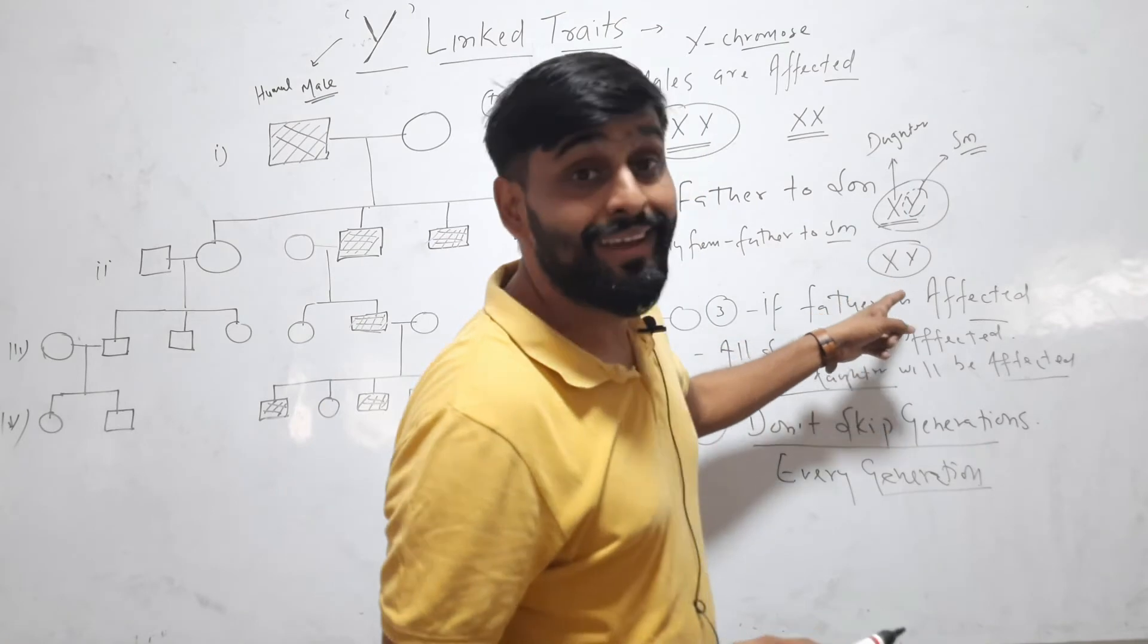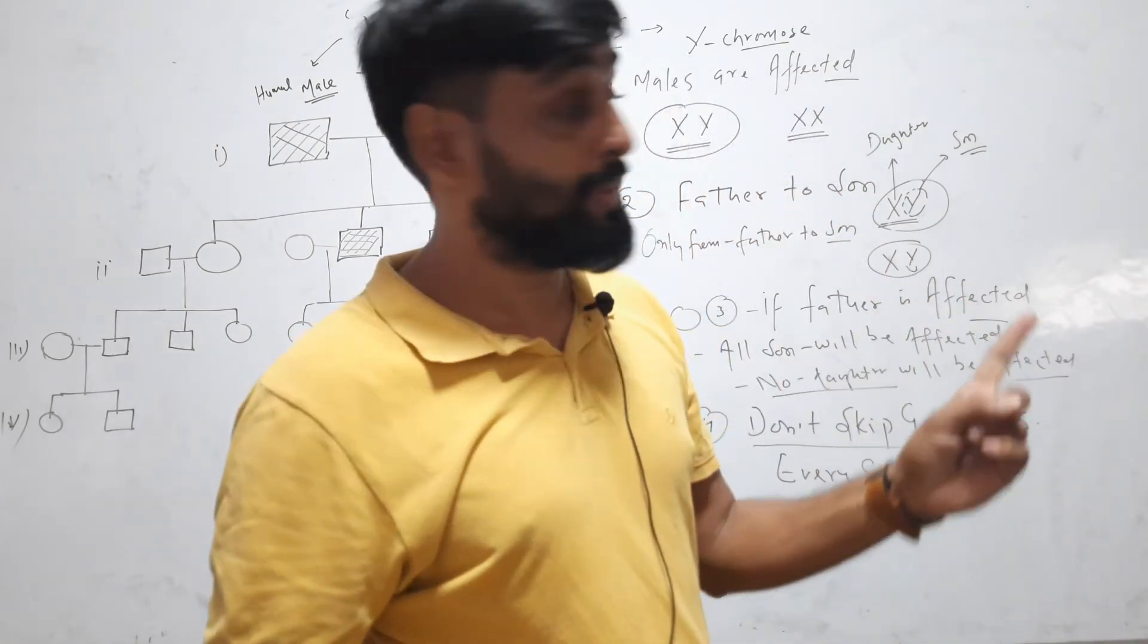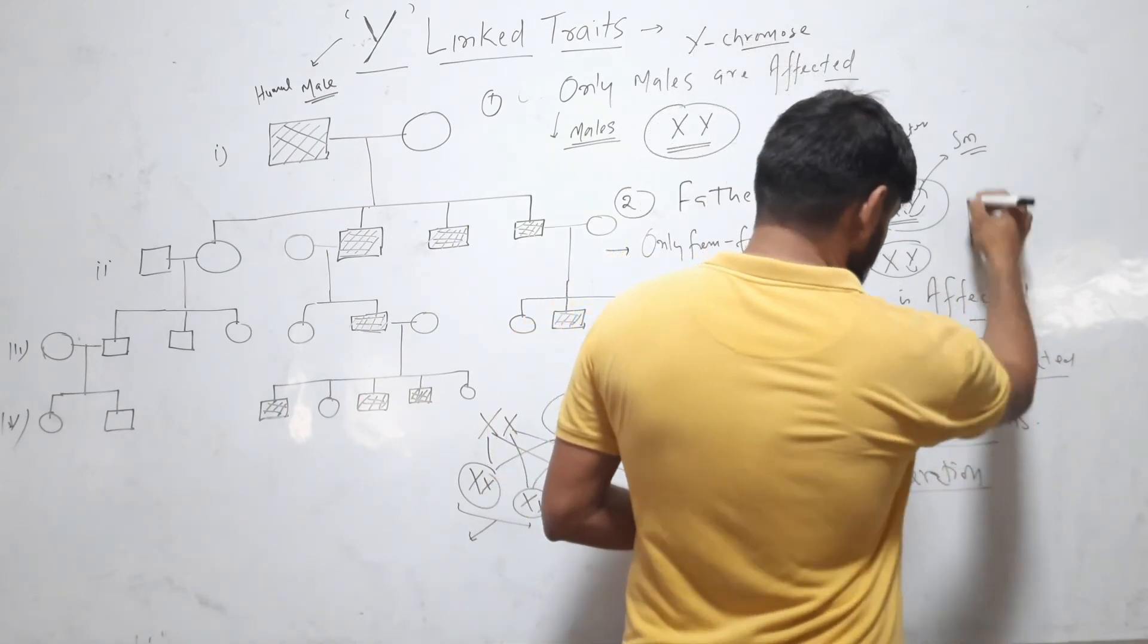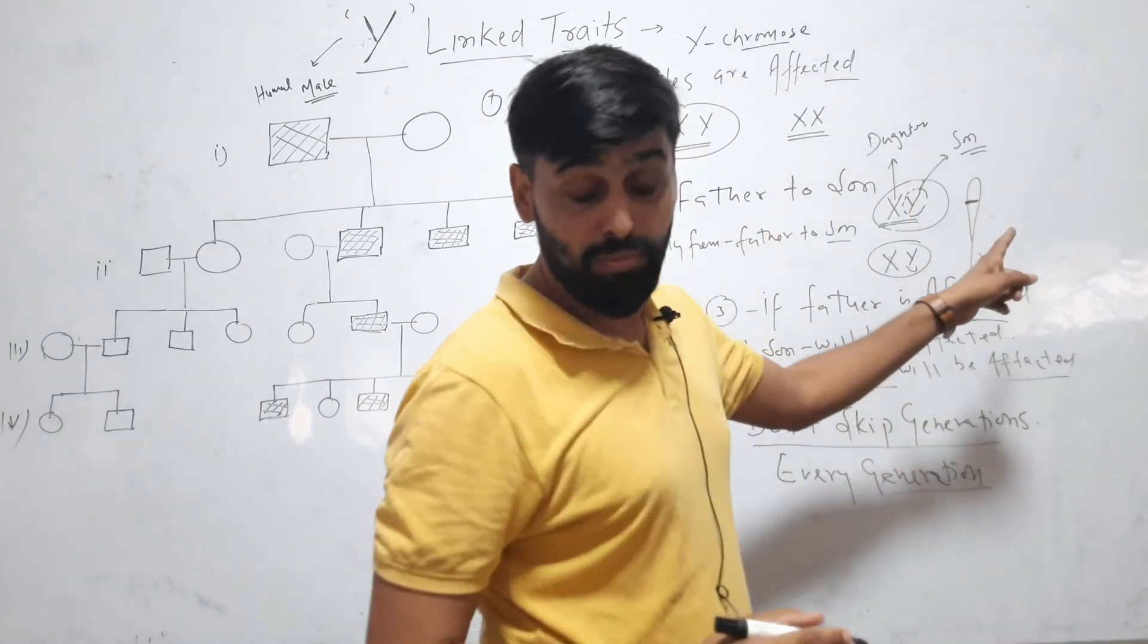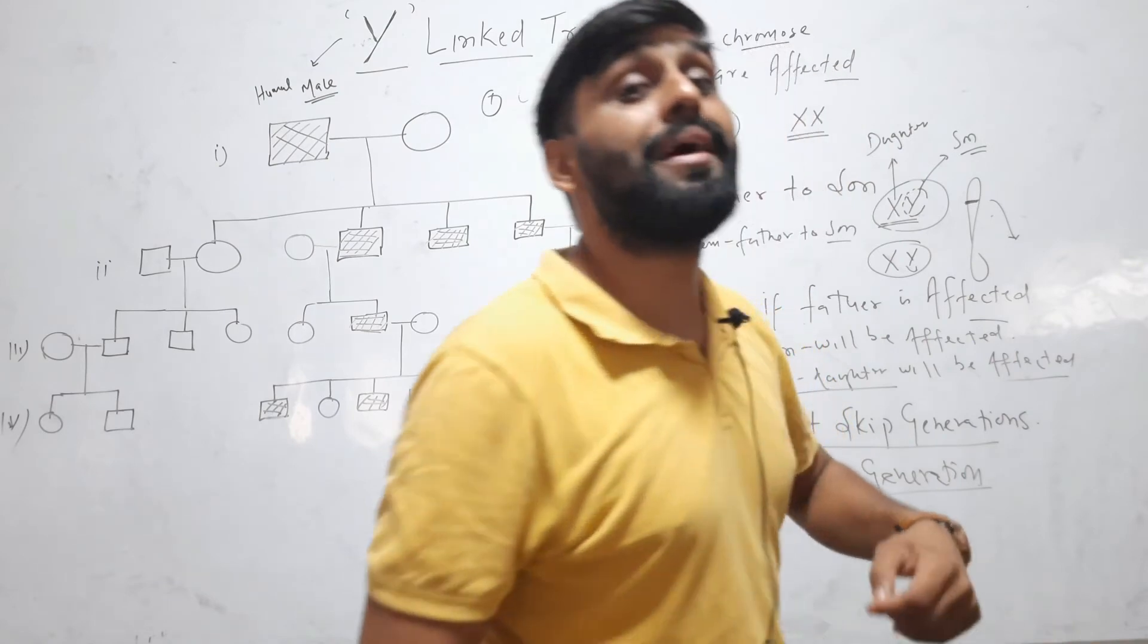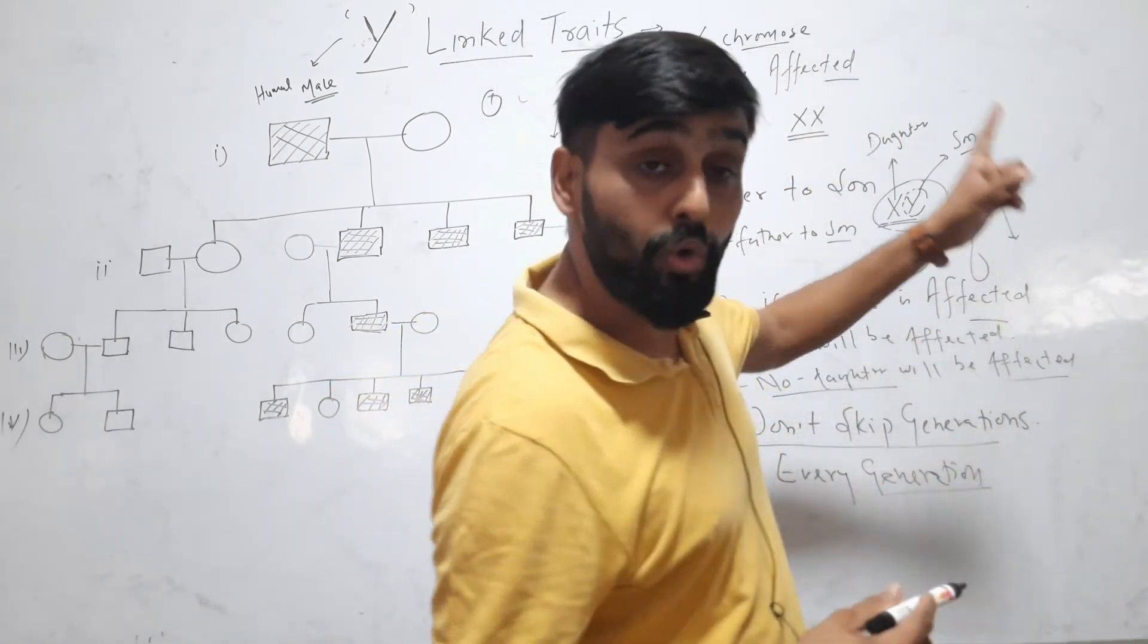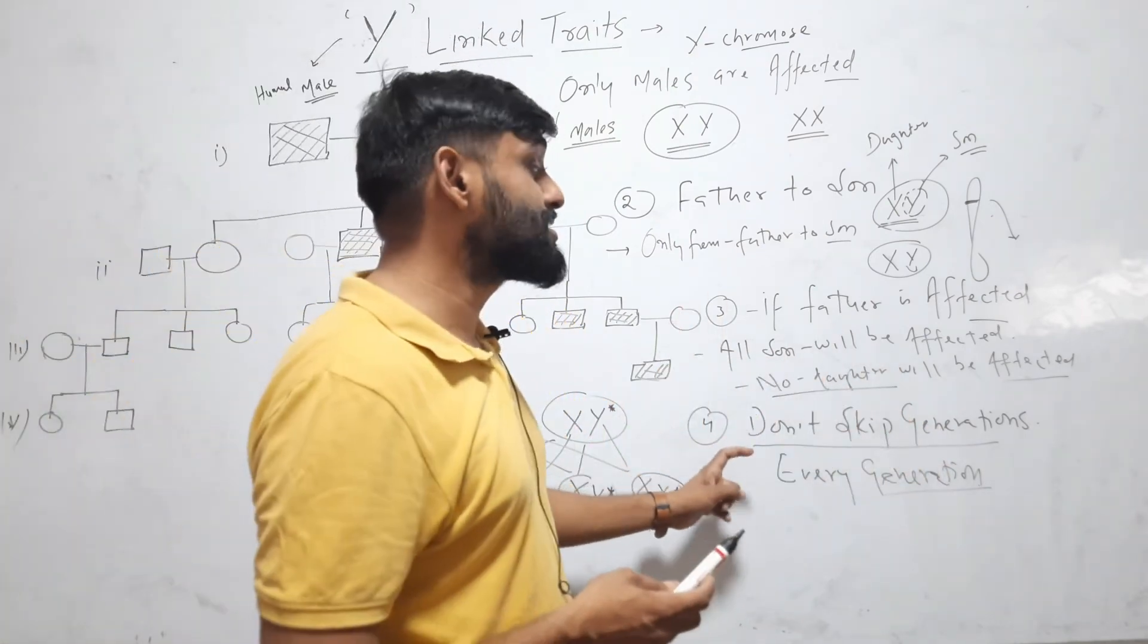Because human male is hemizygous for Y-chromosome, it does not have two Y-chromosomes, it has single Y-chromosome. So if there is a problem in any gene of Y-chromosome, it will be manifested or its effect will be shown because there is no backup gene, only single Y-chromosome is present in humans. So it will not skip generation.